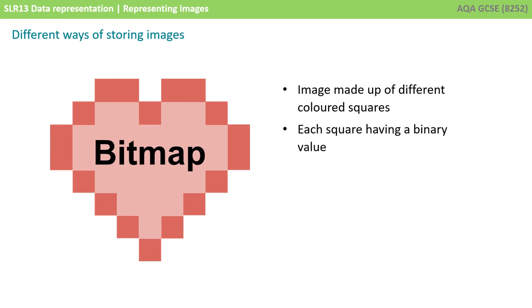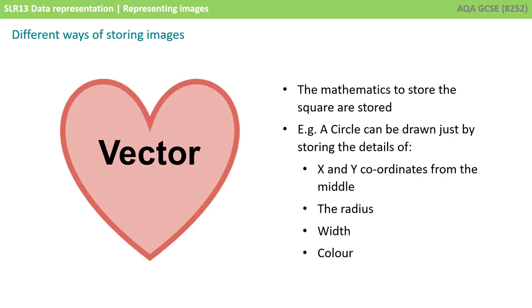With bitmaps, an image is made from lots of different coloured squares, each square having a binary value. With vectors, the mathematics to draw the image is stored instead. For example, a circle can be drawn if you know the x and y coordinates from the middle, the radius, the width, and the colour.